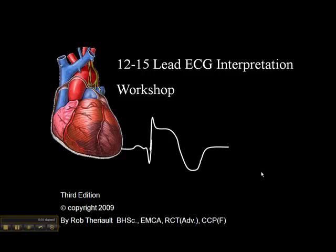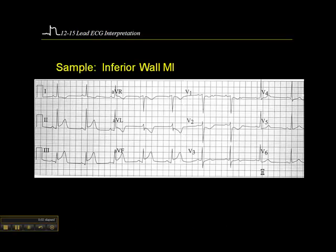We're on page 21 of the workbook, and this is an example of an inferior wall myocardial infarction. As I mentioned in an earlier presentation, it's important to go through this in a systematic way. I always start by looking at lead groupings — anatomically contiguous leads.